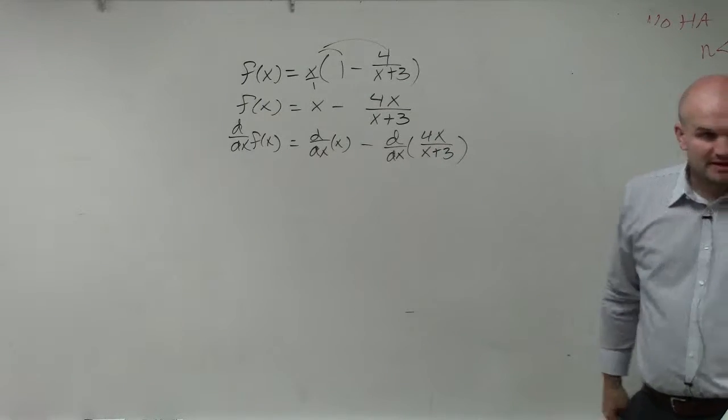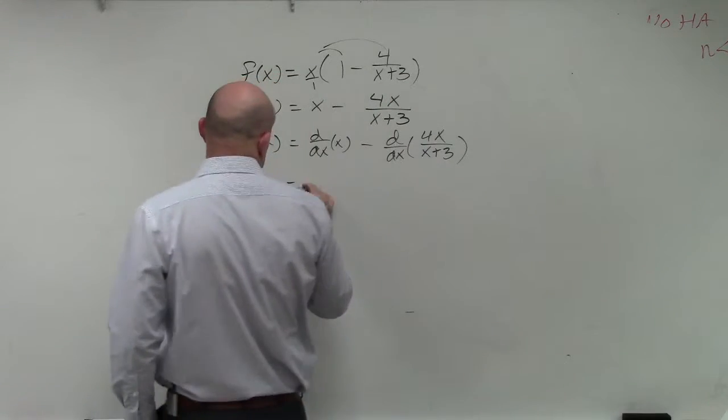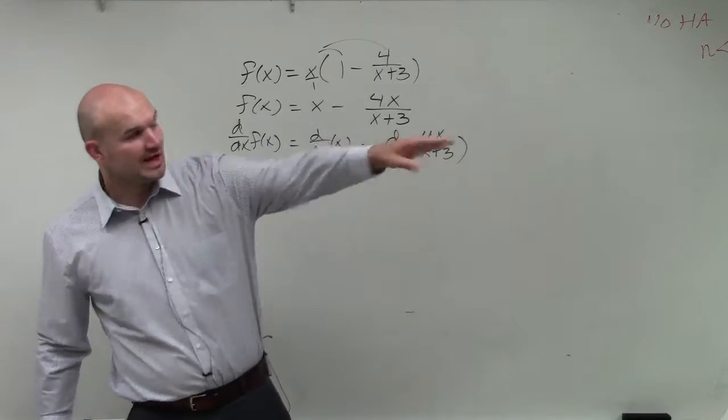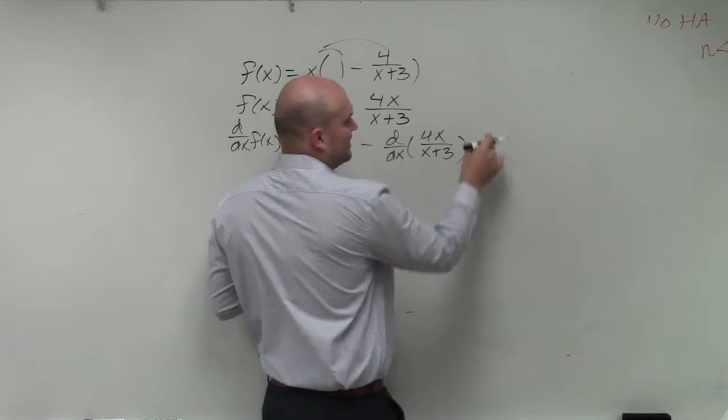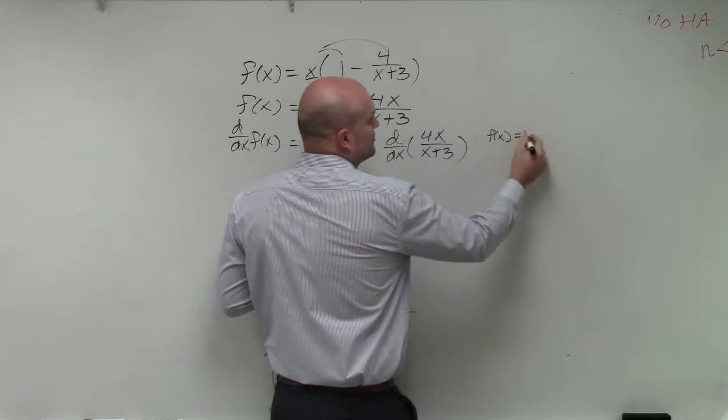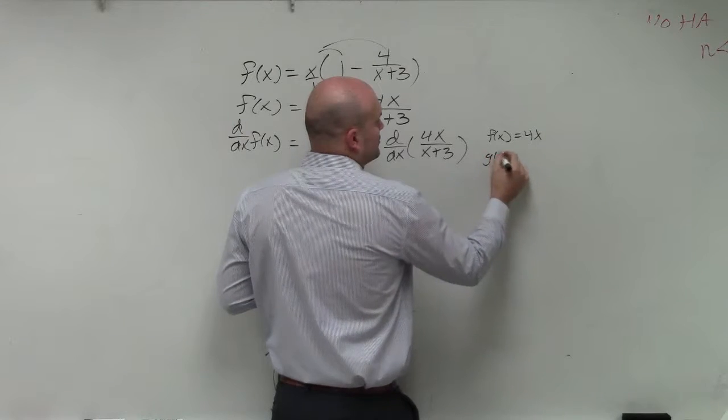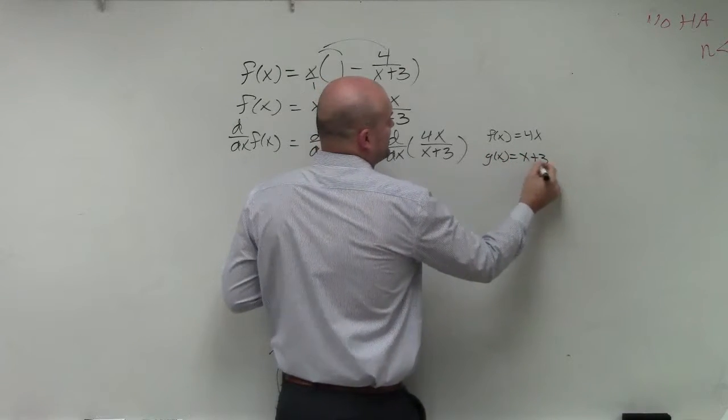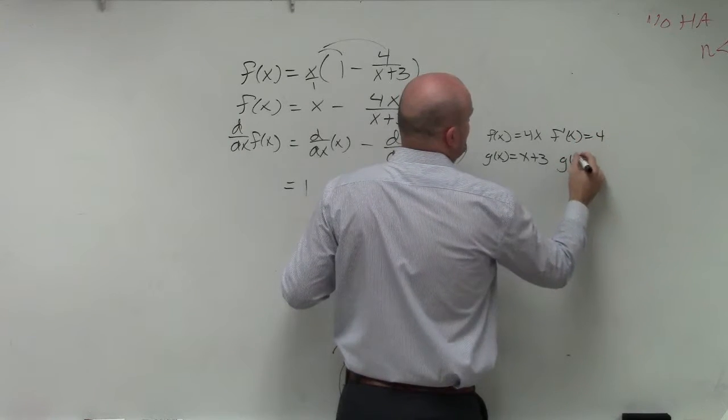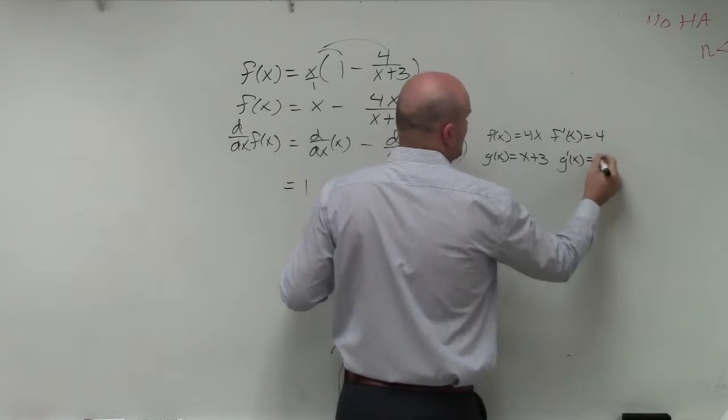We know the derivative of just the variable x is going to leave us with 1. However, here we have to apply the quotient rule. Identifying our top and bottom functions, you can say that f(x) equals 4x, g(x) equals x plus 3, f'(x) equals 4, and g'(x) equals 1.